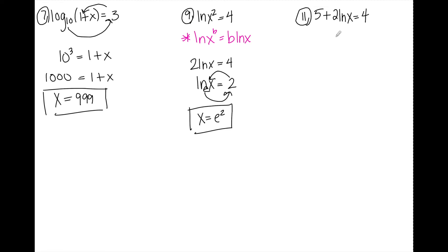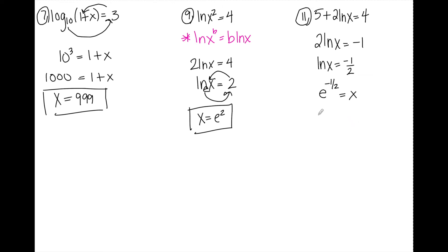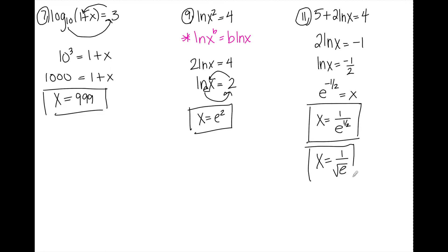Number eleven: I'm going to start by isolating ln x. I subtract 5 first so that I have 2 ln x is equal to negative one. I divide by two and get ln x equals negative one half. Rewriting in exponential form: e to the negative one half is equal to x. I don't want a negative exponent, so I write this as one over e to the positive one half, or x equals one over the square root of e. Either form is acceptable.